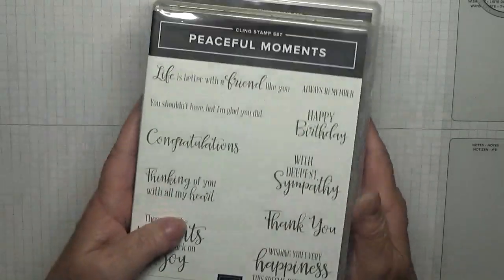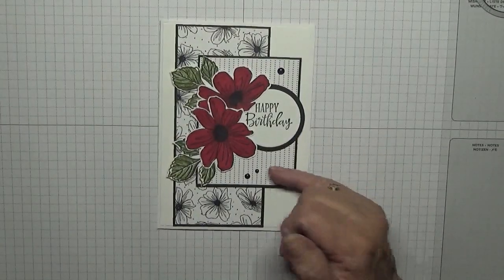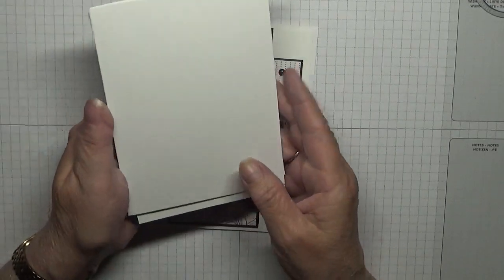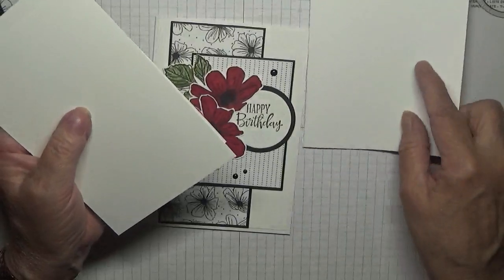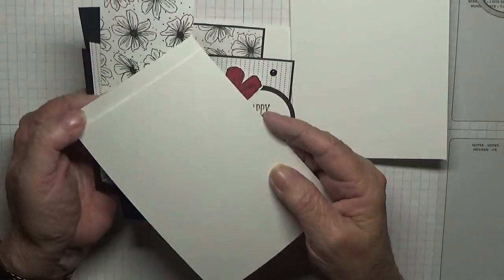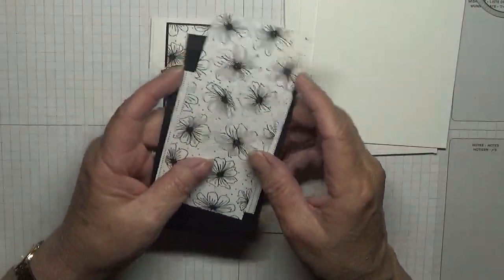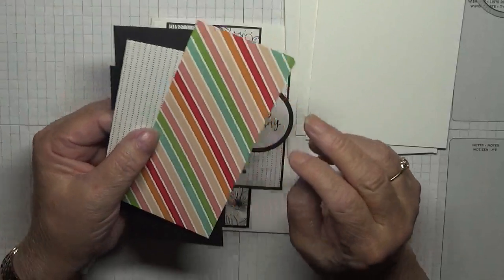I'm also using Peaceful Moments for the happy birthday sentiment. The papers and card base: I've got a card base of 8 and a quarter by 5 and seven-eighths scored at 4 and one-eighth, two pieces of Whisper White at 5 and five-eighths by 3 and seven-eighths, and some DSP.